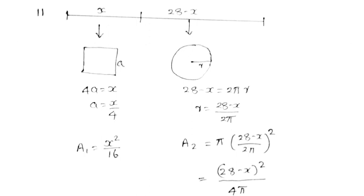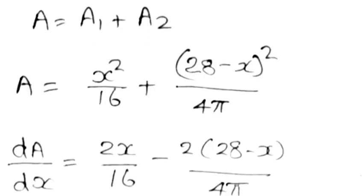For the circle: 28 − x = 2πr, so r = (28 − x)/(2π). Area of circle A2 = π · [(28 − x)/(2π)]² = (28 − x)²/(4π). Total area A = A1 + A2 = x²/16 + (28 − x)²/(4π).